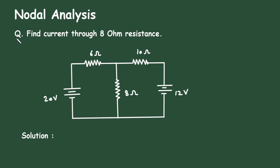Nodal Analysis Question: Find the current through the 8 ohm resistance. In this circuit, we have to find the current through this 8 ohm resistor by using nodal analysis.